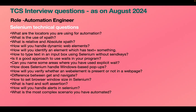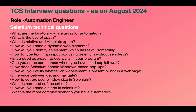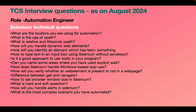What is hard assertion and soft assertion? Hard assertion means the test cycle stops and moves to the next @Test annotation, whereas soft assertion means it just moves to the next line of code. How will you handle alerts in Selenium? Using the switchTo() method — for clicking OK use accept(), for clicking Cancel use dismiss(), and to get the alert message text use getText().